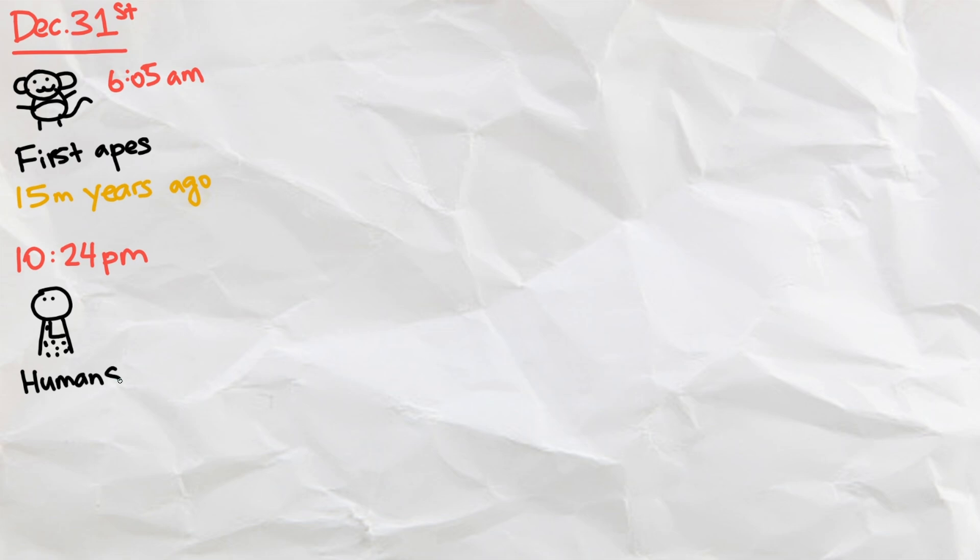This leaves us December 31st, when the first apes appeared 15 million years ago at 6:05 AM, the first humans at 10:24 PM, the discovery of fire at 11:44 PM, and the first homo sapiens, our species, at 11:48 PM.